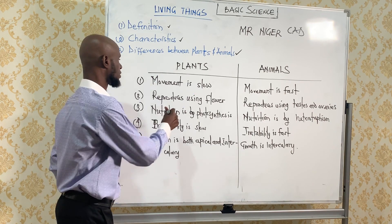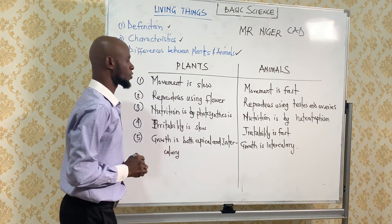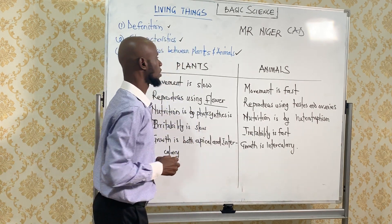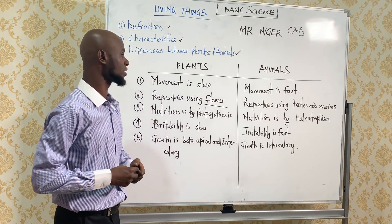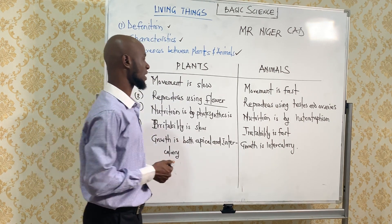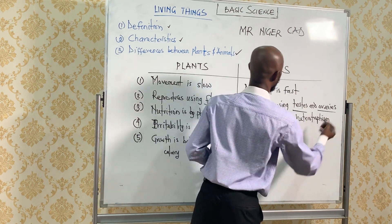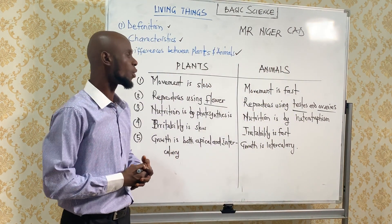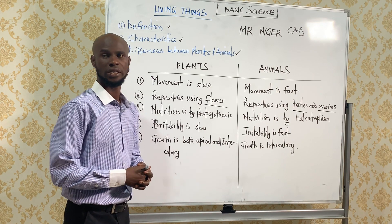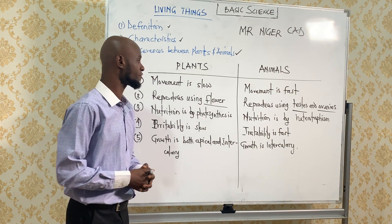Reproduction now. Plants reproduce using the flower, while animals — for example, human beings — reproduce using the testis and the ovaries. We have two testes in the male and two ovaries in the female.